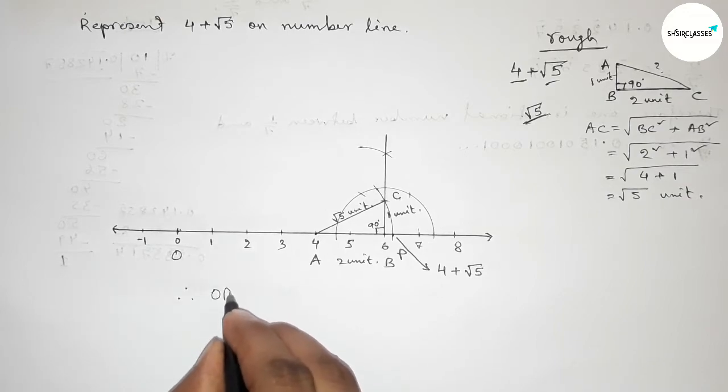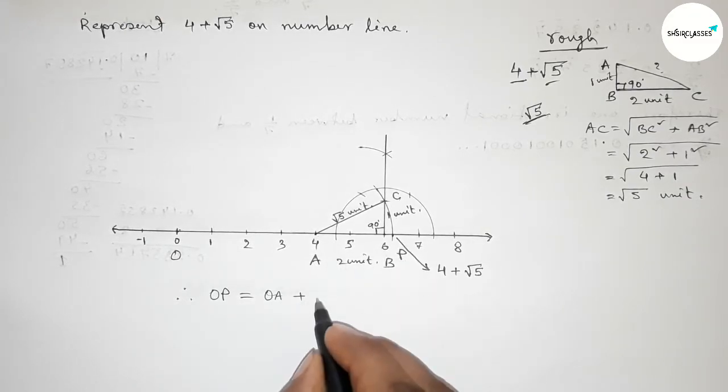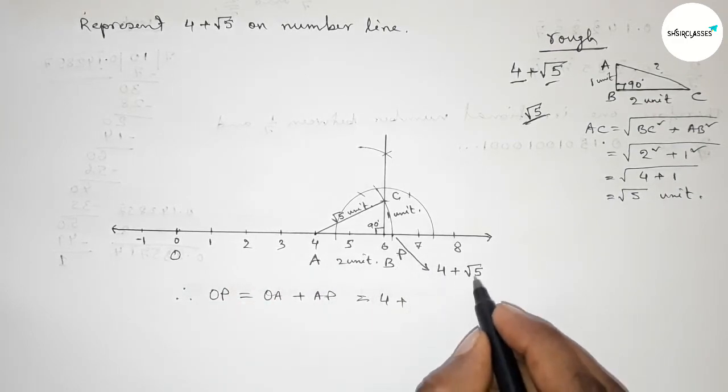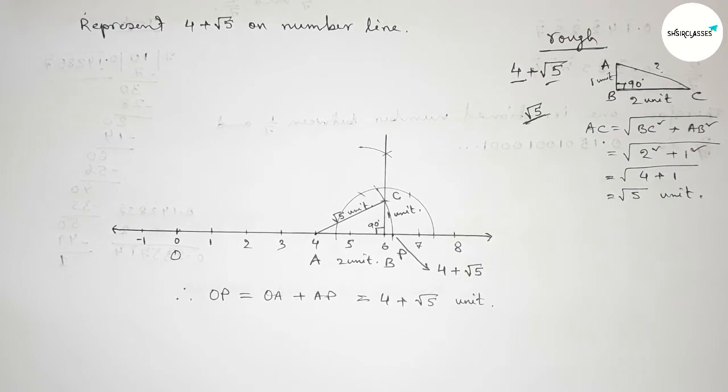OP equal to, we can write OA + AP, and OA equal to 4 units plus AP equal to √5 units. So that's all, thanks for watching. If this video is helpful to you then please share it with your friend. Thanks for watching.